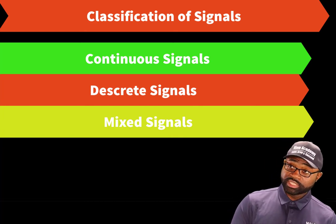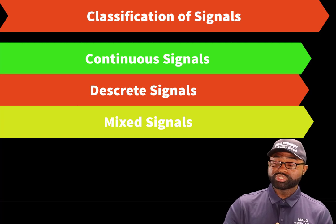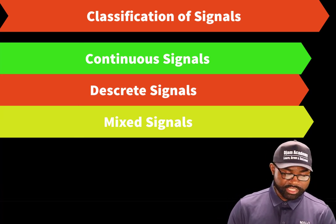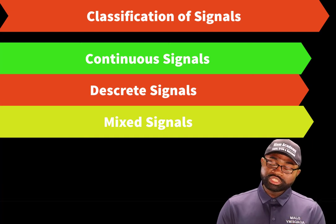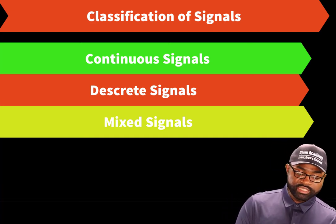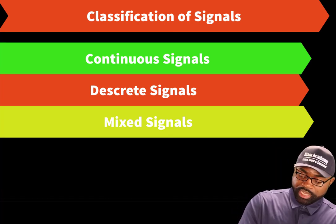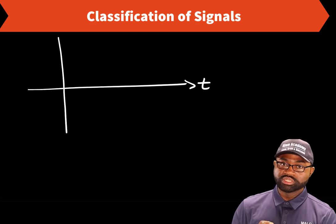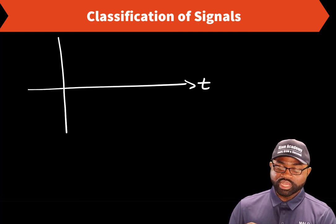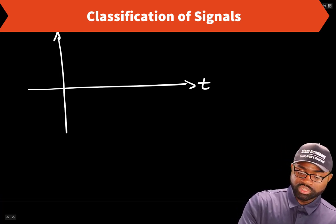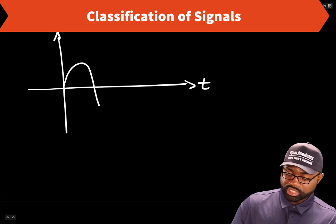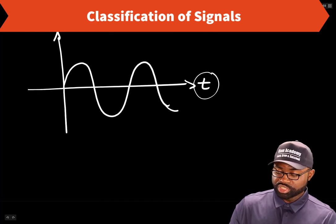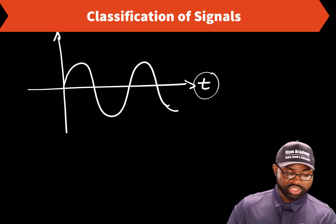A continuous signal is represented by a continuous function whose independent variable is continuous. A continuous signal is present for all instants in time or space. A typical example of a continuous signal is the voltage across the capacitor or the current through a resistor in an RC circuit. If we draw the voltage across the capacitor, it is a sinusoid, and the values of the independent variable T are continuous. Therefore, this is a continuous signal.